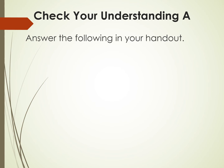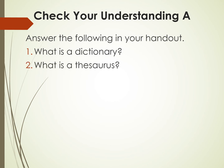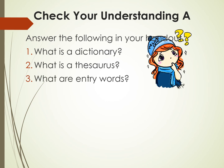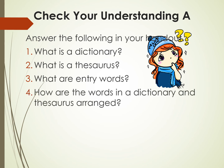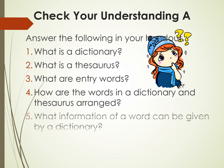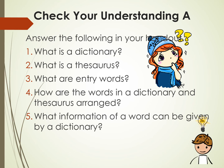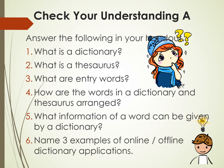Please bring out your handouts and let us answer Check Your Understanding A. You need to answer the following: First, what is a dictionary? Second, what is a thesaurus? Third, what are entry words? Fourth, how are the words in a dictionary and thesaurus arranged? Fifth, what information of a word can be given by a dictionary? And sixth, name three examples of online or offline dictionary applications.